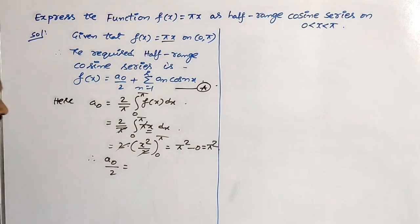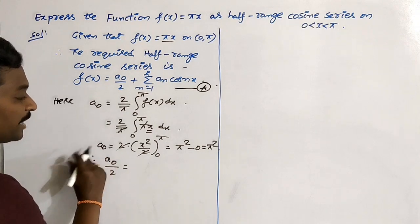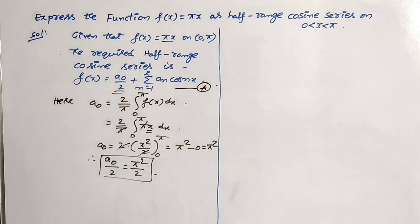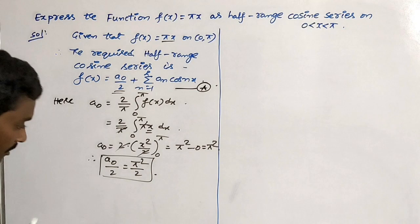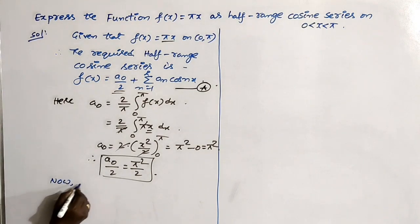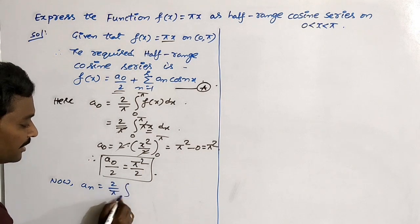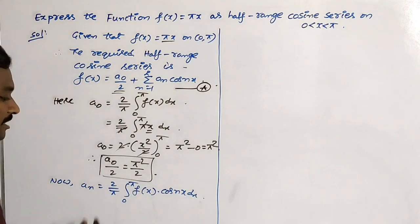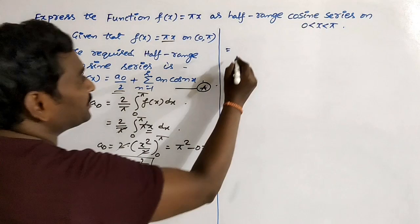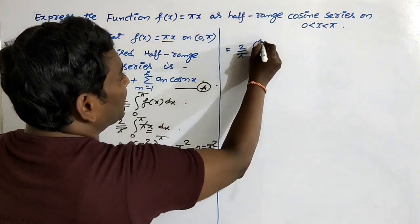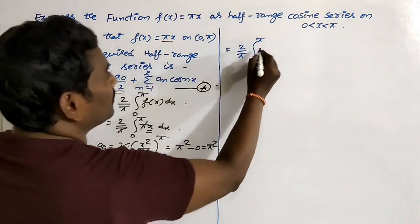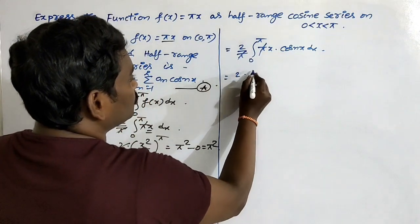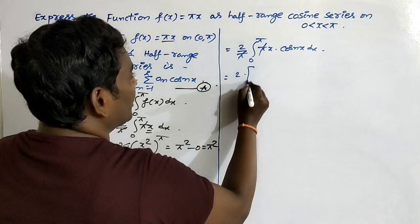The 2 and 2 cancel, so you get π² − 0 = π². The value of a₀/2 is therefore π²/2. Now the formula for aₙ is (2/π)·∫₀^π f(x)·cos(nx) dx. Replacing the values: (2/π)·∫₀^π πx·cos(nx) dx. The π's cancel, leaving 2·∫₀^π x·cos(nx) dx.